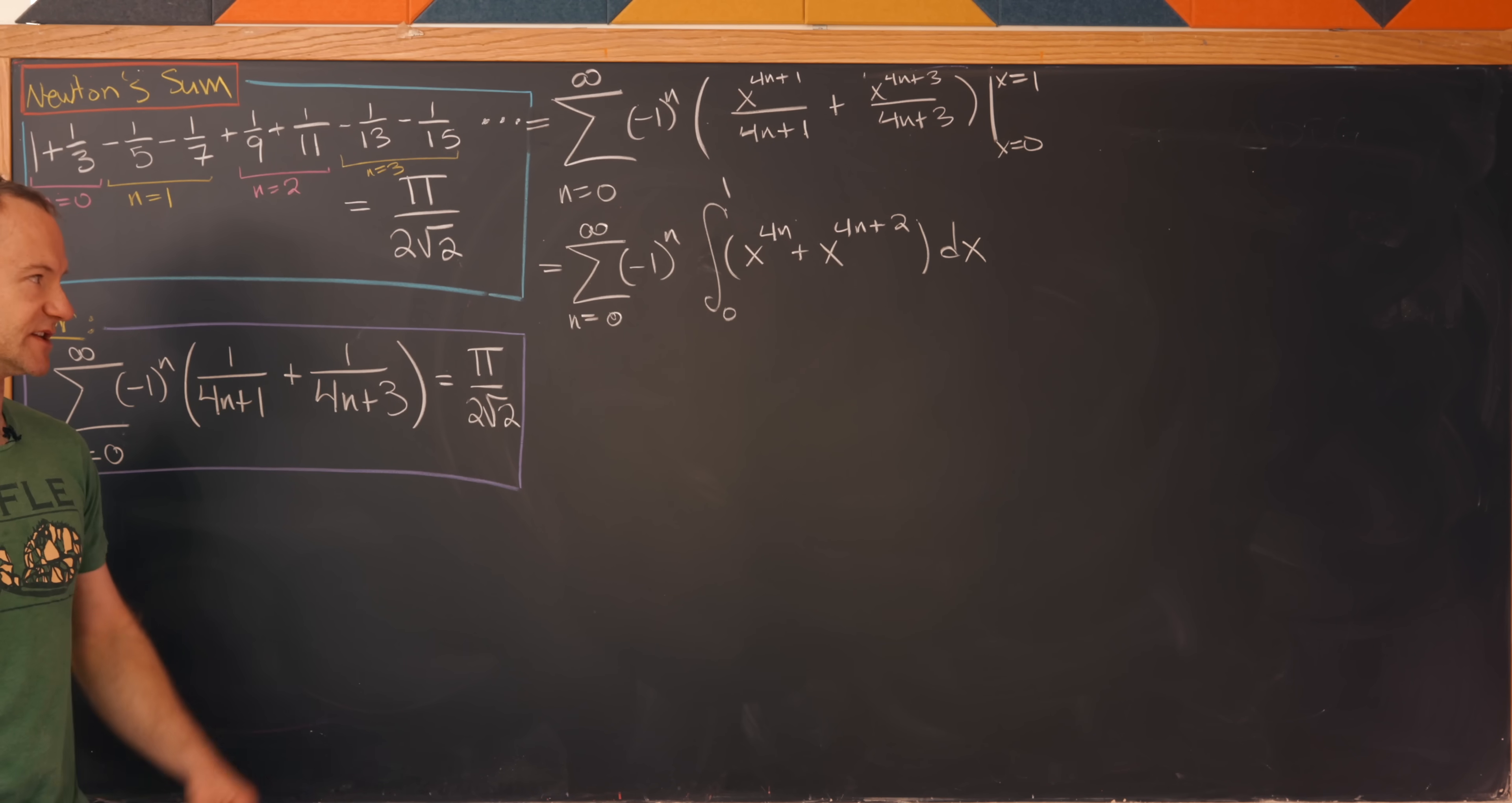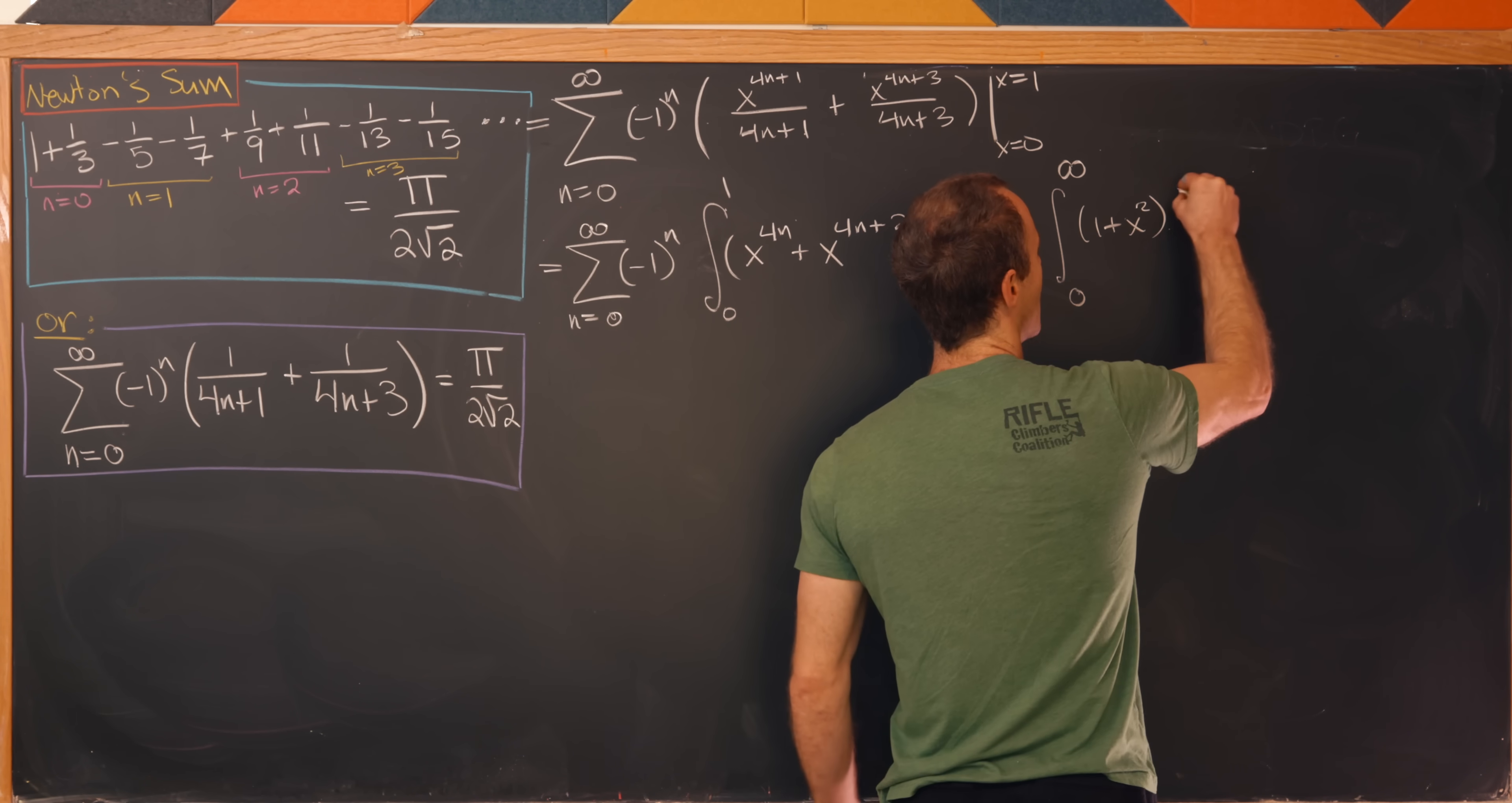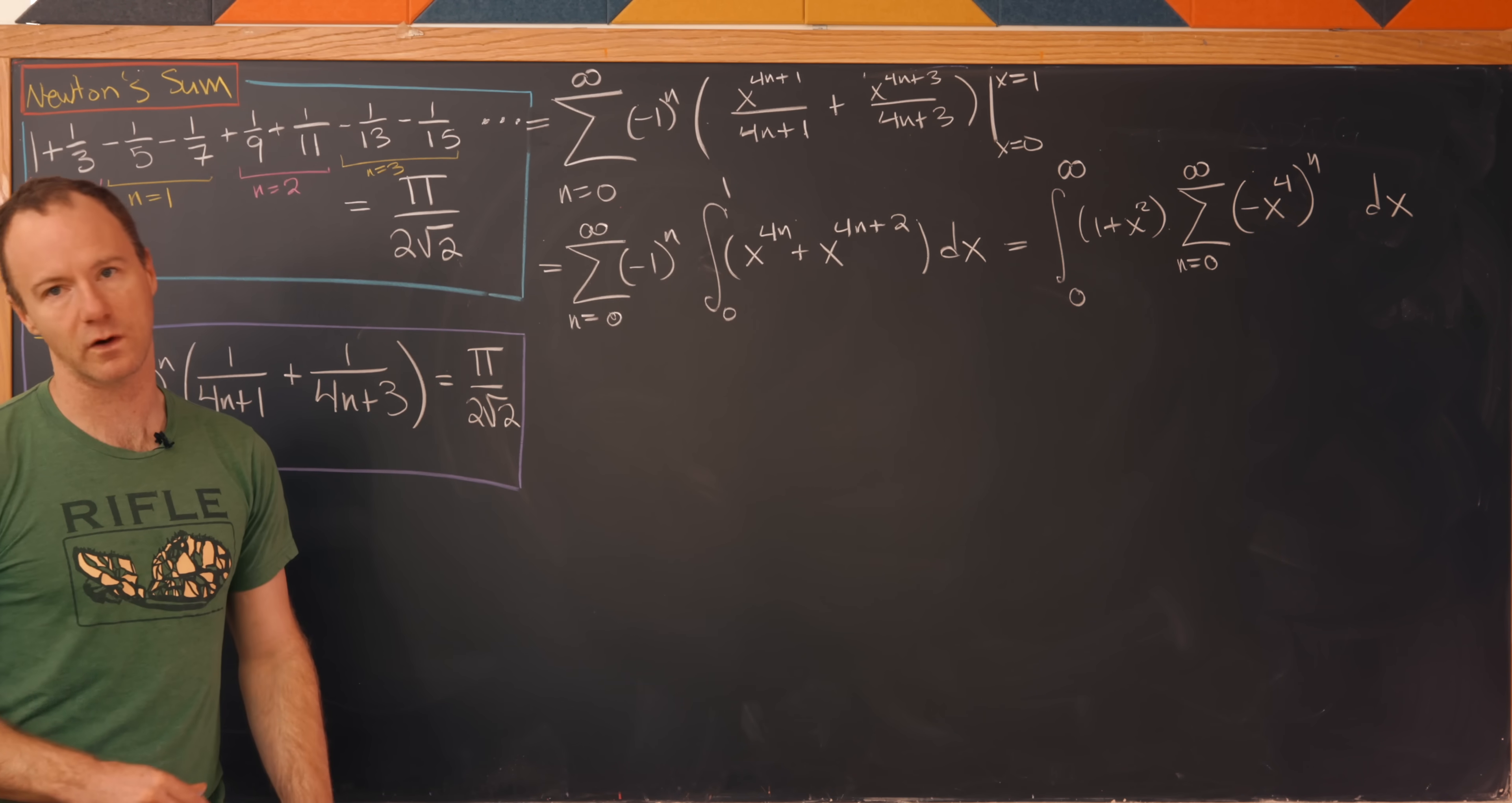Now by the dominated convergence theorem, I can exchange the order of summation and integration, and that's exactly what I'll do. I'll write this as the integral from 0 to 1 of, and actually while I'm at it, I want to factor an x^(4n) out of this, and that's going to leave me with a (1 + x^2). Then I'll have the sum as n goes from 0 to infinity of (-x^4)^n dx, where I've creatively rewritten some things. I took this (-1)^n and brought it in a little bit, then I factored an x^(4n) out.